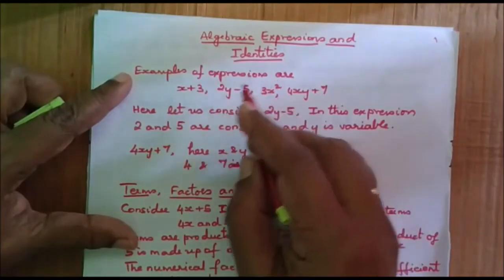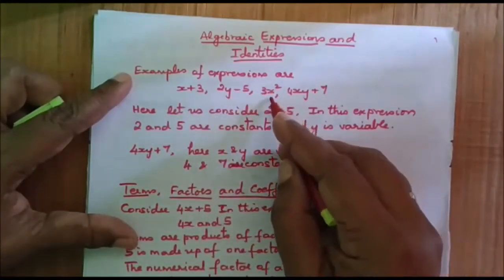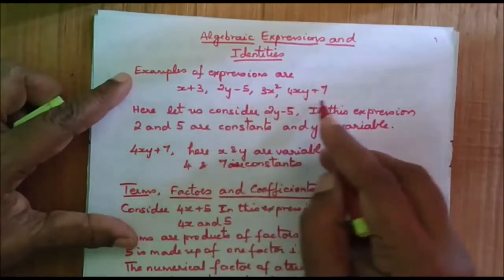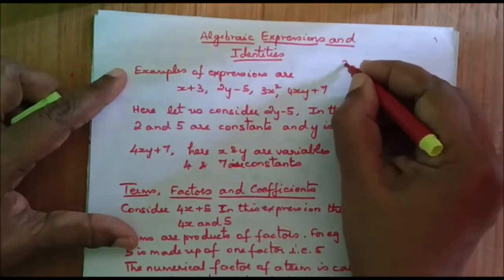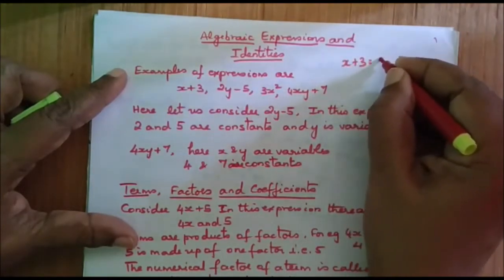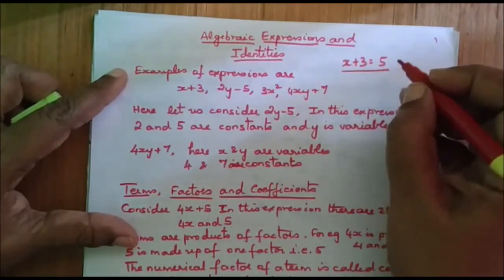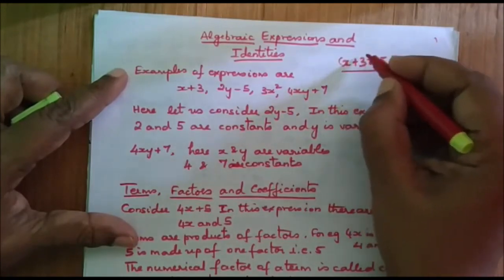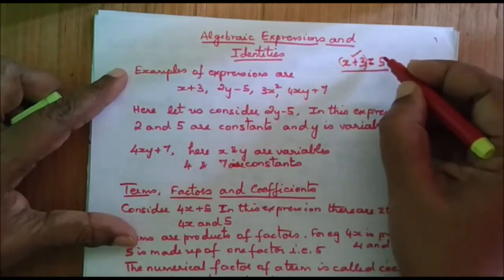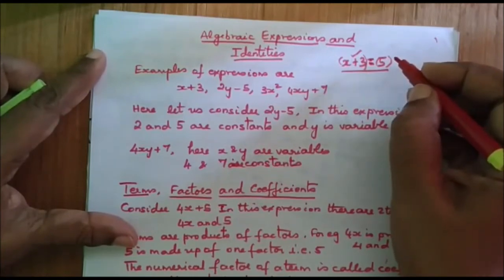Examples of expressions are x plus 3, 2y minus 5, 3x squared, 4xy plus 7. All these are examples of expressions. Suppose I write x plus 3 equals 5 — now is this an expression? No. This is an equation because we have equated both the expressions with the equal to sign. So here x plus 3 is one expression and 5 is another expression.